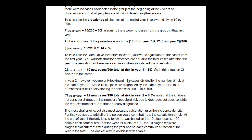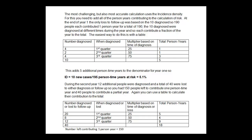To look at cumulative incidence at the end of year one, we find 10 cases out of 200, giving us a cumulative incidence of 5%. However, in year two, we have to subtract the 10 people that developed diabetes in year one, so our denominator is different — 200 minus 10 equals 190. The cumulative incidence at the end of year two is the 12 new cases divided by 190, giving us a cumulative incidence of 6.3%.